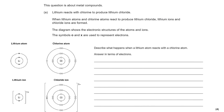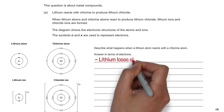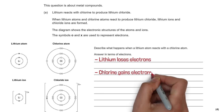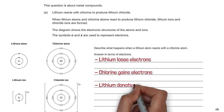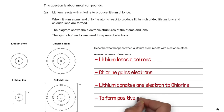Lithium reacts with chlorine to produce lithium chloride. Describe what happens when a lithium atom reacts with a chlorine atom in terms of electrons. Lithium loses electrons and chlorine gains electrons — lithium donates one electron to the chlorine atom. This forms positive and negative ions: lithium becomes positive and chlorine becomes negative.